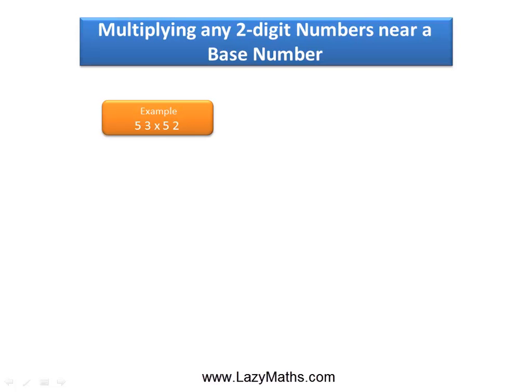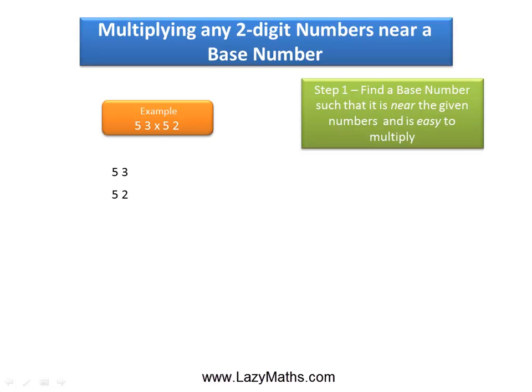Here's an example of multiplying any two-digit number near a base number: 53 times 52. The first step is to find a base number. A base number is a number which is close to both 53 and 52, as well as easy to work with. In this case, 50 is such a number — we call 50 the base number because it is both close to 53 and 52 and easy to work with.